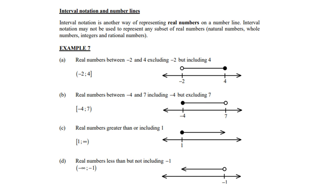So look at a, real numbers between -2 and 4, excluding -2 but including 4. If you look at -2, it's a round bracket, meaning you exclude. On the side of 4, a square bracket, meaning you include. Therefore, if you look at the drawing, -2 has an open circle and 4 has a dark dot, with a continuous line between the two.